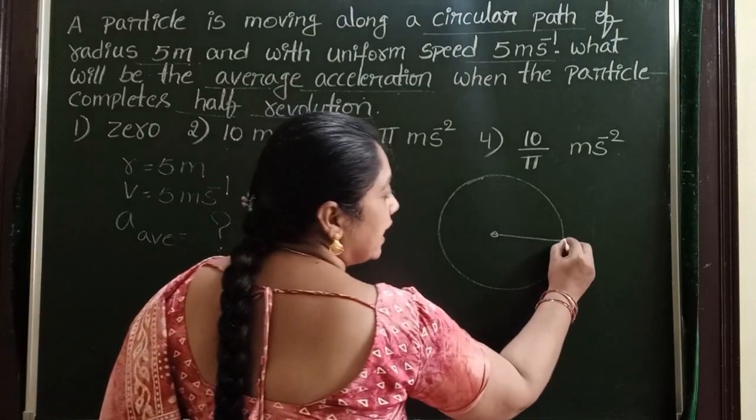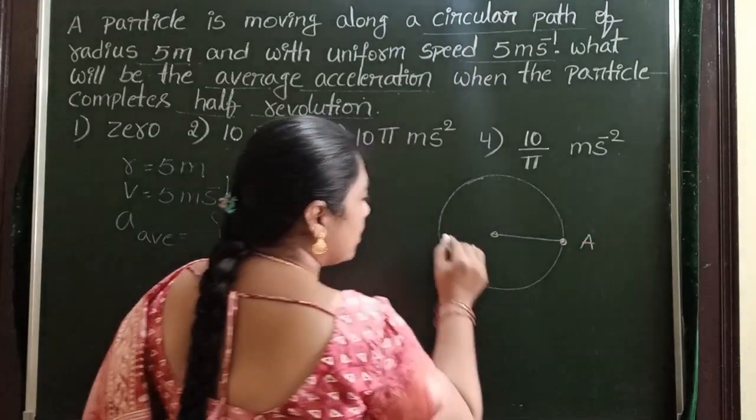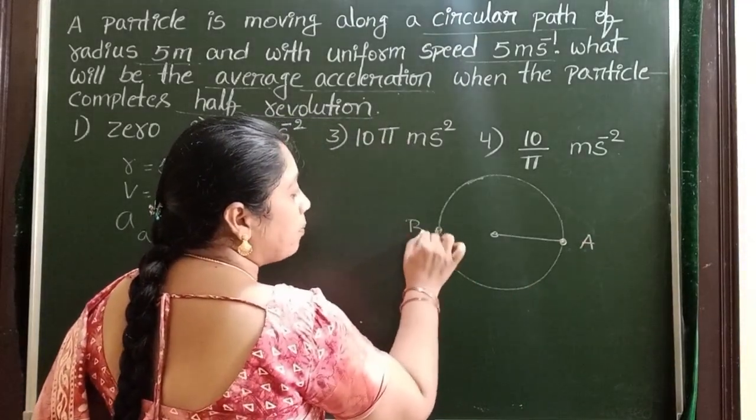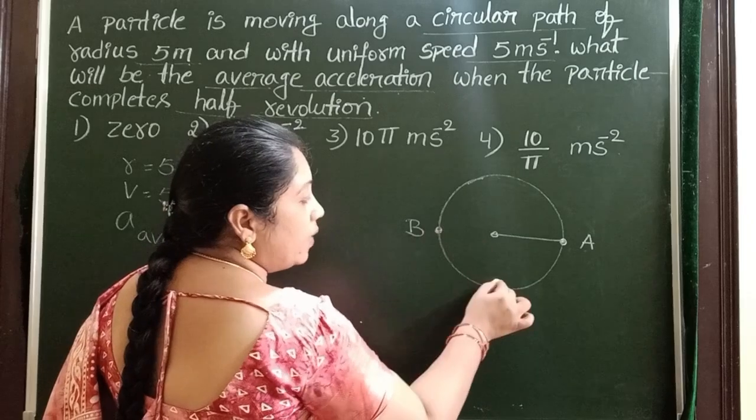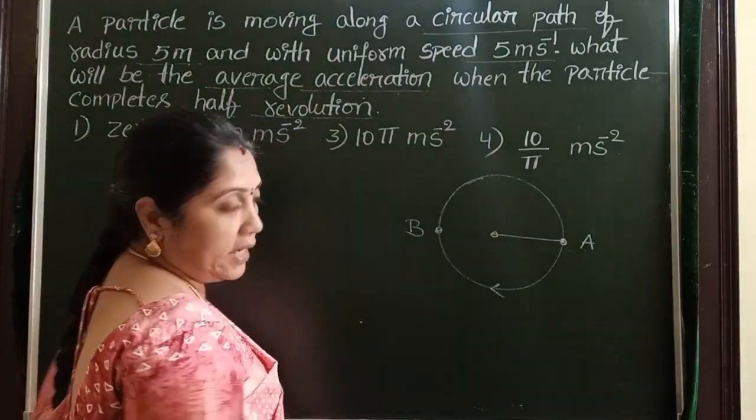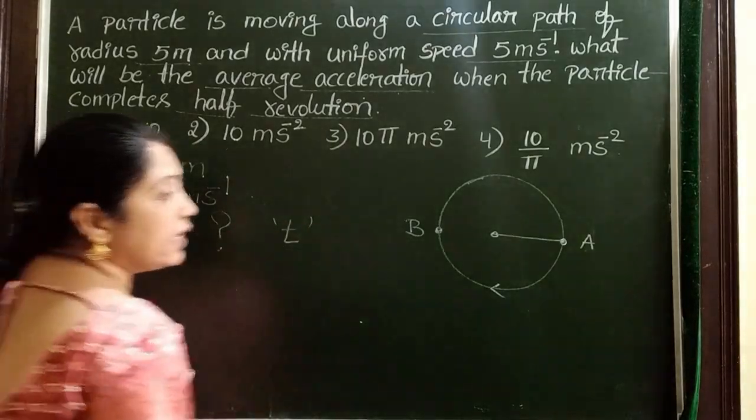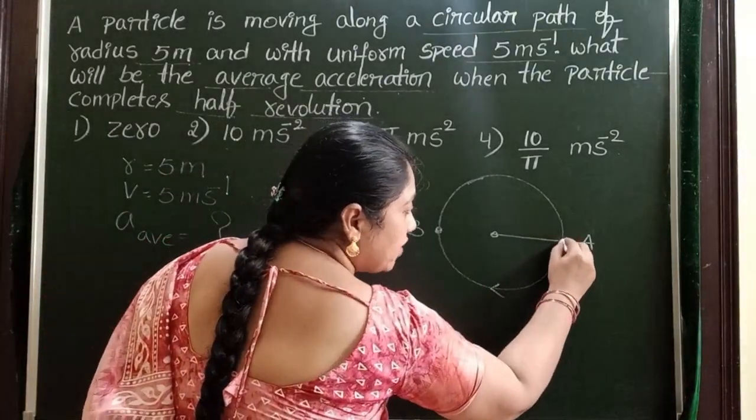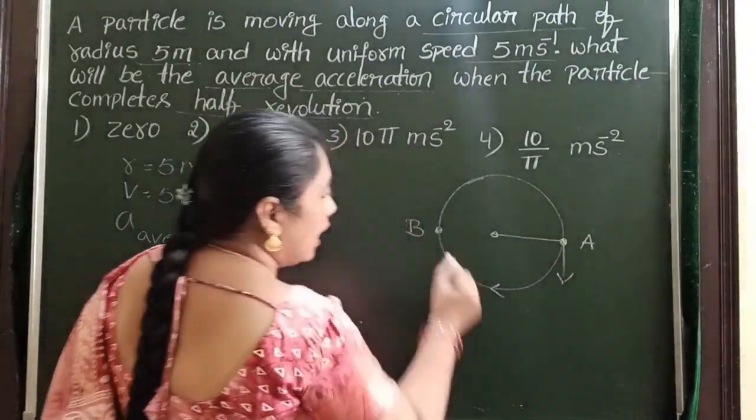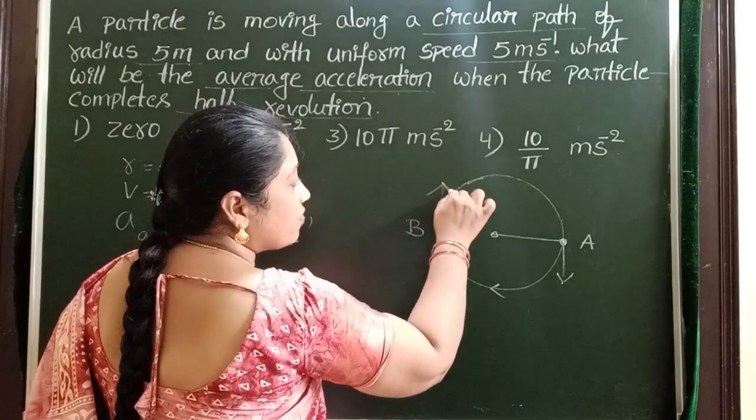Let us take initial position is A and final position B. From A to B, the time taken by the particle, let it be T. At A point, direction of the velocity. And B point, direction of the velocity.